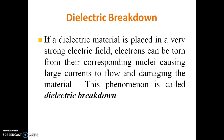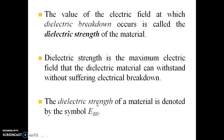That kind of destruction-type phenomena is called dielectric breakdown. If a dielectric material is placed in a very strong electric field, electrons can be torn from their corresponding nuclei, causing large current flow and damaging the material. The value of the applied electric field at which dielectric breakdown occurs is called the dielectric strength of the material — that is the capacity up to which the dielectric material can withstand the applied high electric field.